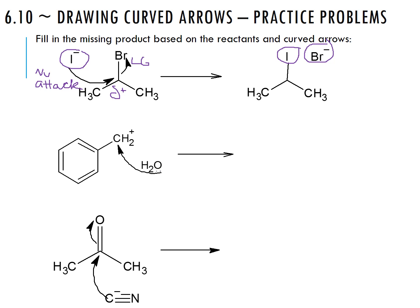In the second problem, placing lone pairs on oxygen: the arrow goes from oxygen to a carbon — again a nucleophilic attack. Oxygen is the nucleophile because of its lone pair; the carbon is the electrophile because of its positive charge. In the final product, oxygen has a positive charge because it still has those two hydrogens bonded to it.